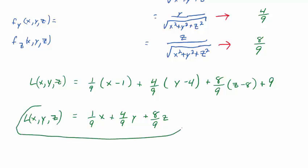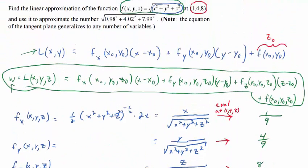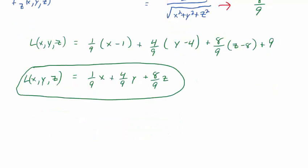So that's the linearization, and then there is a second part to the problem. It asks you to evaluate this number here. But of course, that's just the function with x equal to 0.98, y equal to 4.02, and z equal to 7.99. So essentially, that second part asks you to find or estimate f of 0.98, 4.02, and 7.99.